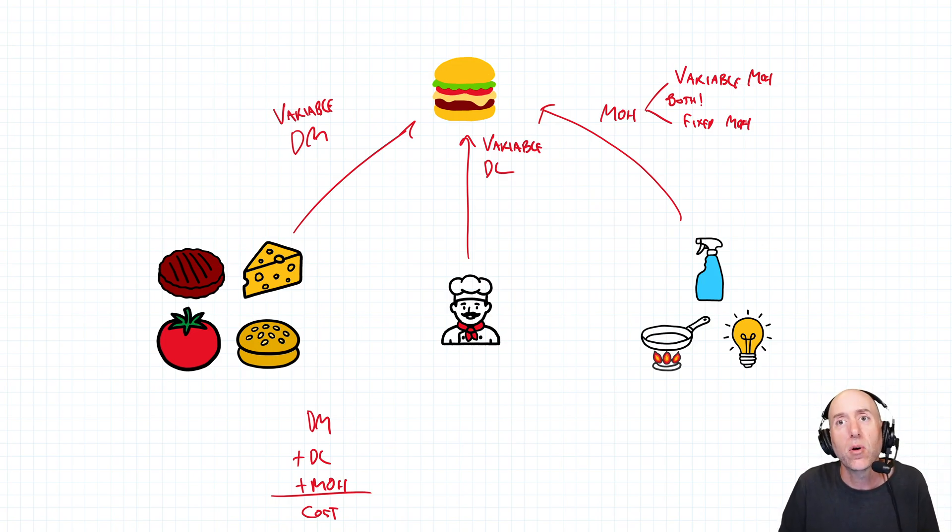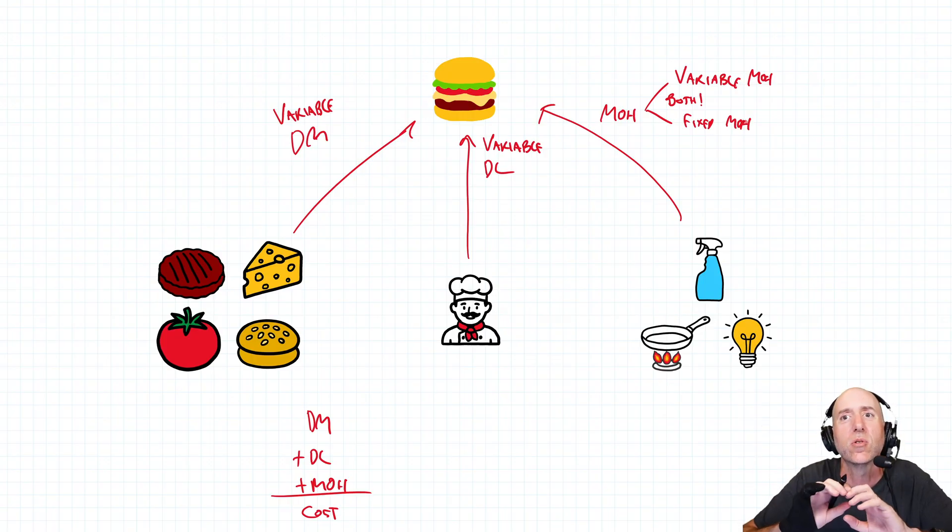Well, determining your variable and fixed cost is tricky because cost of goods sold is this combo of variable and fixed costs. So this chapter shows us kind of how to split it out.